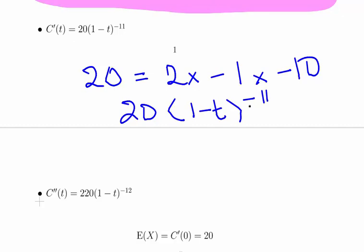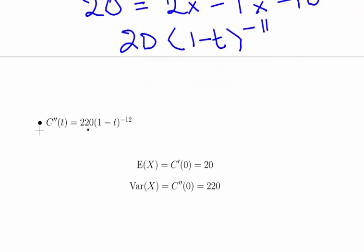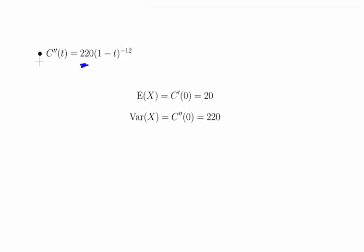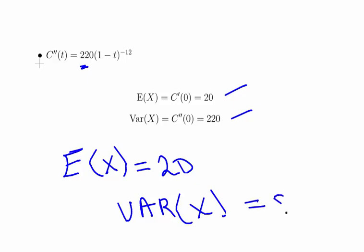Essentially the chain rule is the key thing there. When we evaluate it, the second derivative is just doing the same thing again. A second time we get 20 times minus 1 times minus 11, which gives us 220. So essentially when we evaluate both of those at 0, we get 20 and 220. The expected value of X is 20 and the variance of X is 220.